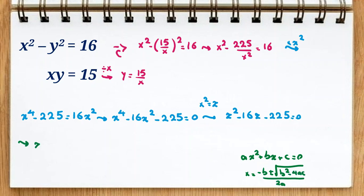So here that will be negative negative 16 plus minus square root of negative 16 squared minus 4 times 1 times negative 225, all over 2a which is 2.